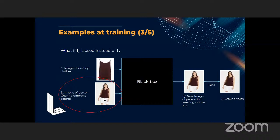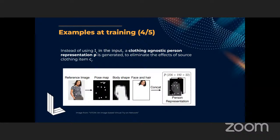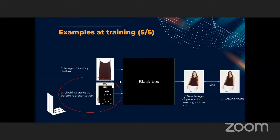What we do have is some clothes of interest and a model wearing those clothes of interest. If we use that as input, there will be some information leakage from the input. Previous virtual try-on methods devised a way to deal with this by creating a clothing-agnostic person representation, which brings information from the pose of the person, the body shape, and the face and hair — but has no information from the input clothes the person is currently wearing.